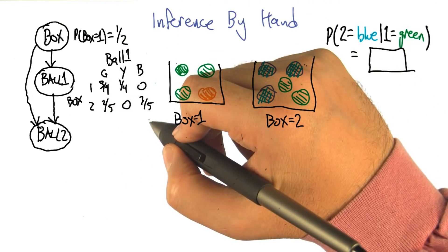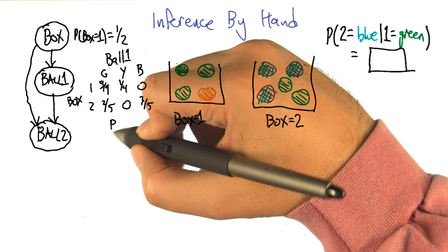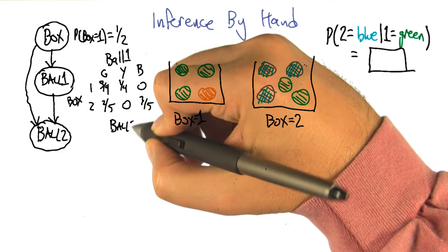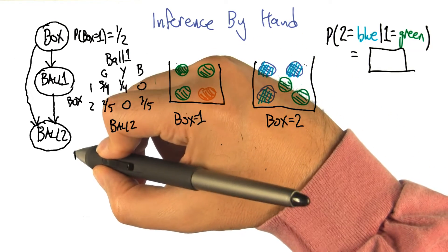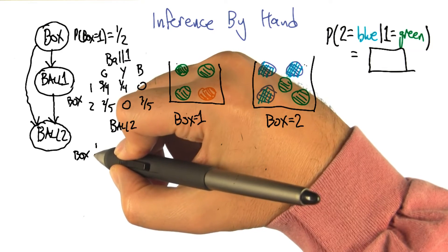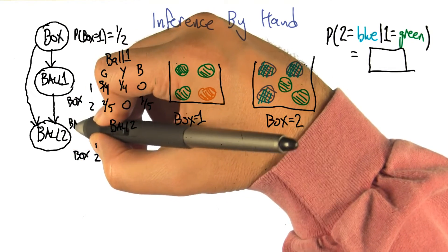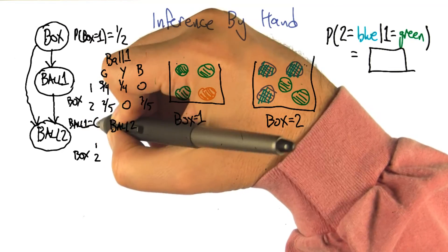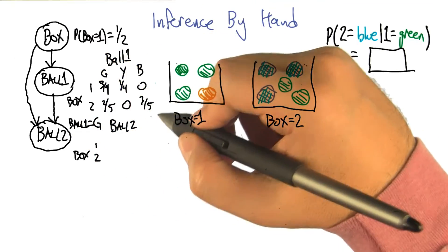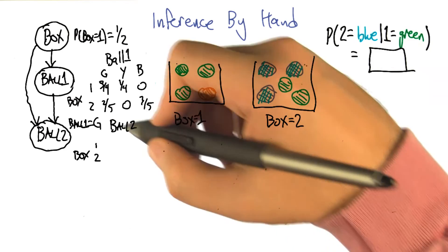And so there's a lot of probabilities that we have to write down. But let's just write down a piece of that table. Let's say that the value of ball two depends on which box, and it depends on what ball one is. But let's just look at the piece of that table where ball one is green. Because that's what we're ultimately going to need here.